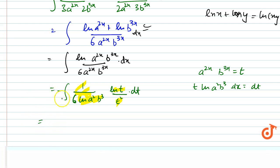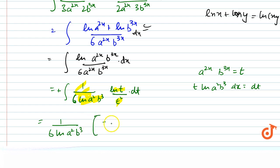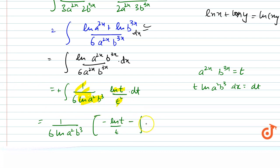This gives us plus 1/6·log(a²·b³) times log(t)/t, minus the integration of minus 1/t², dt.